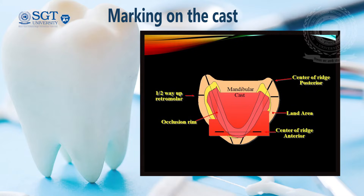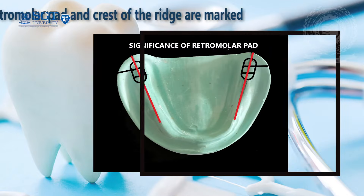Before starting with your Posterior Teeth Arrangement, you have to ensure that the following markings are marked on your mandibular cast. First is the retromolar pad area, which should be divided into three parts, and the upper third of the retromolar pad line should be extended onto the land area of the cast. Also, the center of the ridge should be extended on the cast.